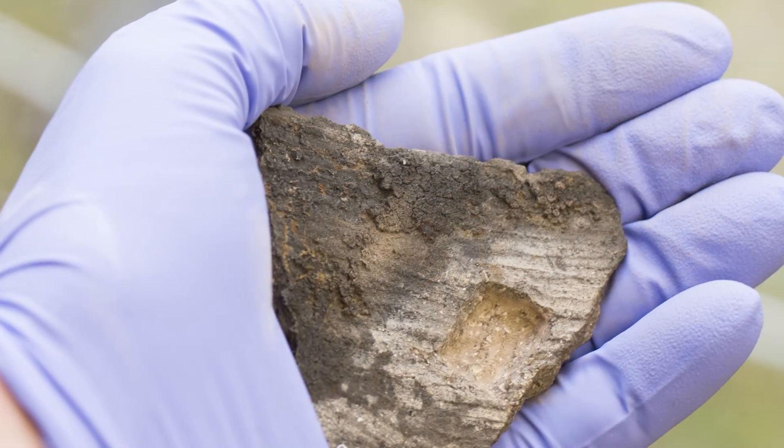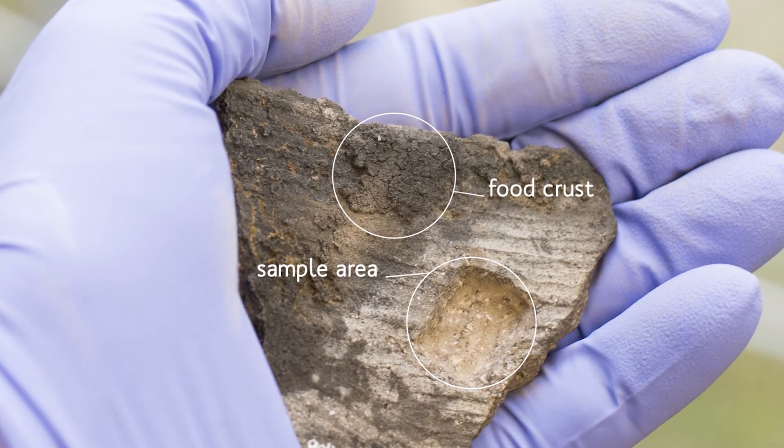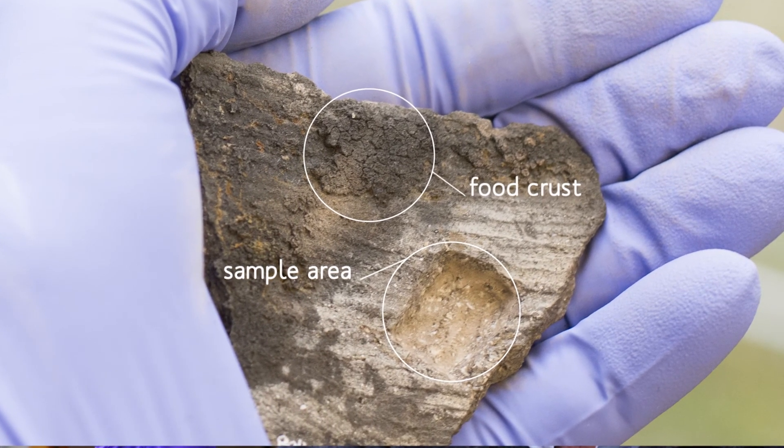Here for example, we have a hunter-gatherer pot from Japan. We know that in Japan, pottery was developed much earlier than other parts of the world, and we have been trying to work out the reasons for this using organic residue analysis. Results have shown that pots like this, but also much earlier pottery, was used pretty much consistently for processing fish.